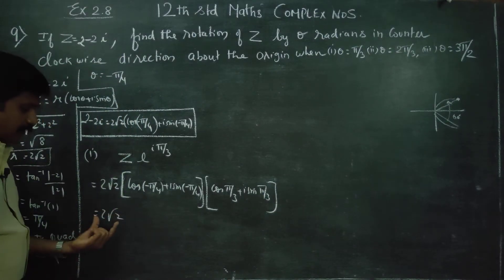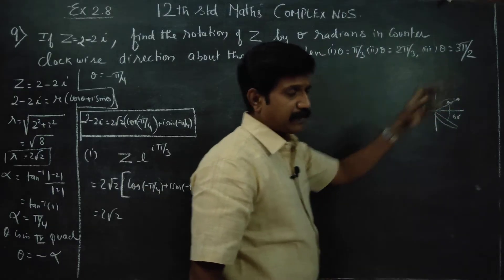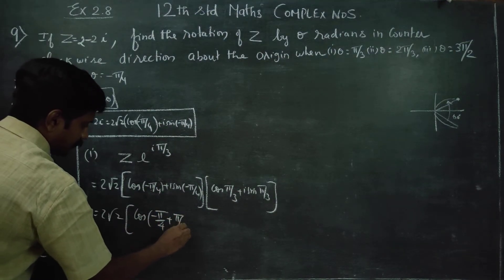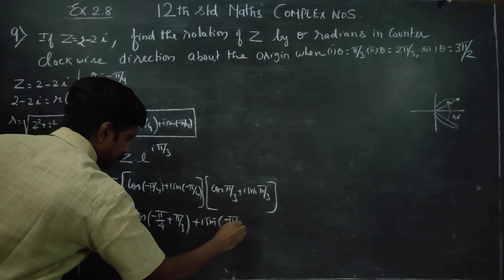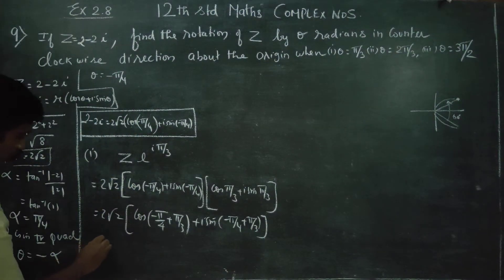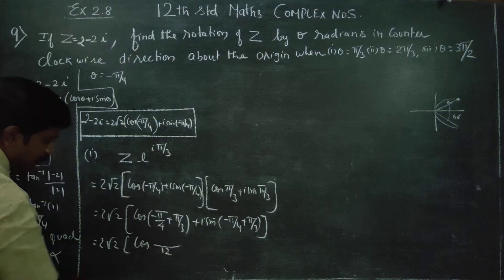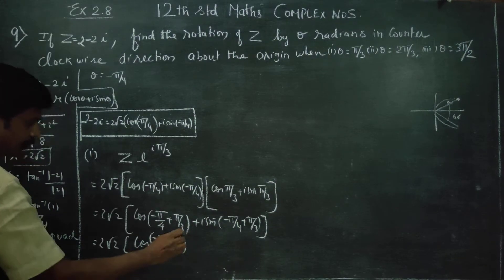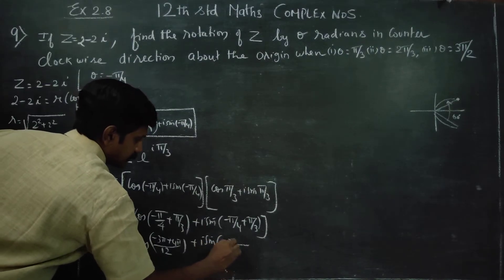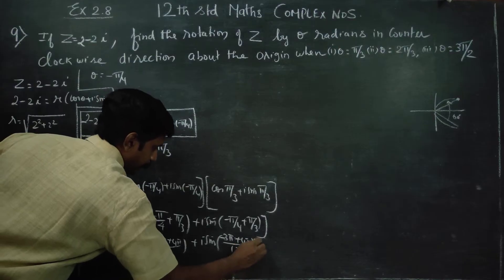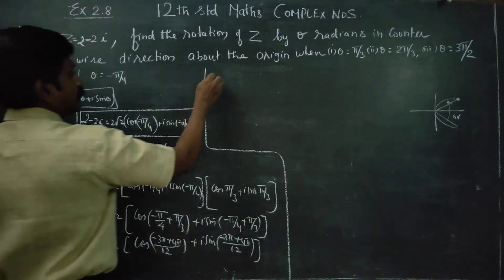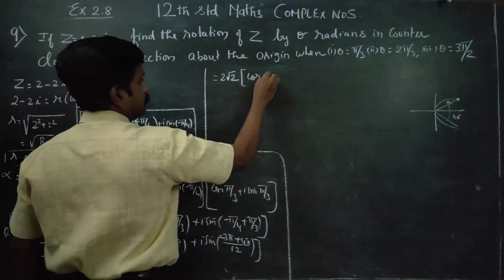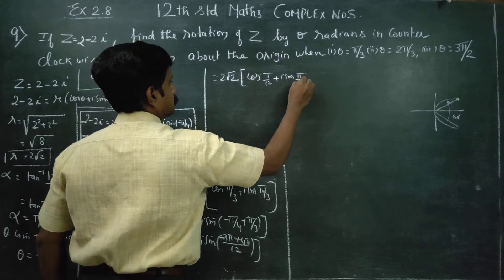Complex number multiplication in polar form is very simple — you just add the arguments. cos(−π/4 + π/3) + i·sin(−π/4 + π/3). If you simplify this, the LCM gives π/12, so your answer is 2√2·cos(π/12) + i·sin(π/12).